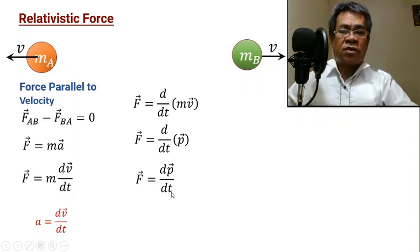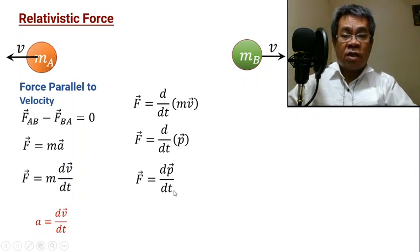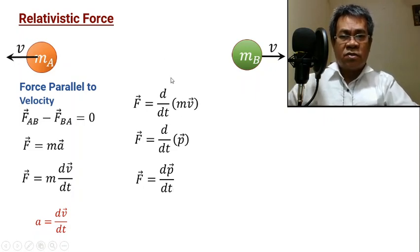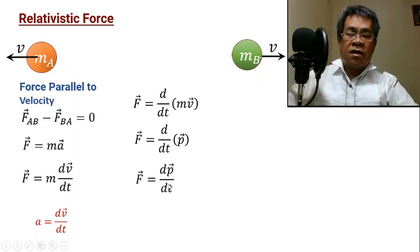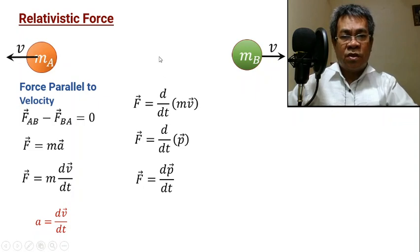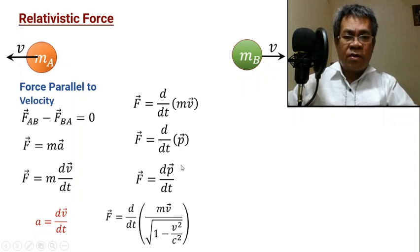Force is inversely proportional to the time of collision — the smaller the time, the greater the force; the greater the time of collision, the smaller the force. This is the force due to two interacting particles. Substituting the relativistic momentum, this becomes d/dt of mv over the square root of 1 minus V squared over C squared. We need to evaluate this derivative using differential calculus.